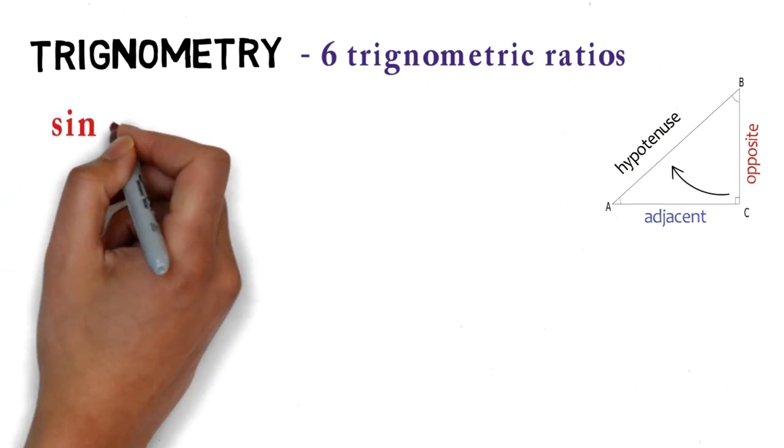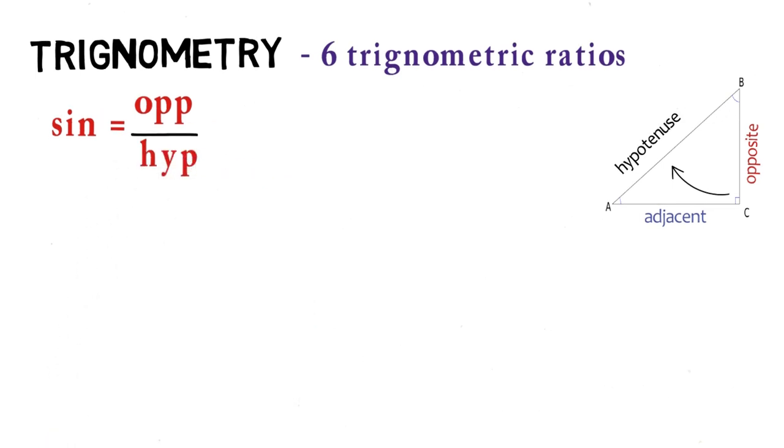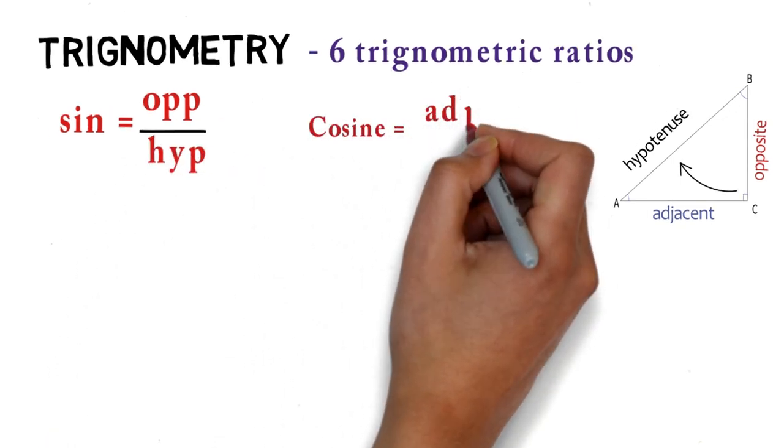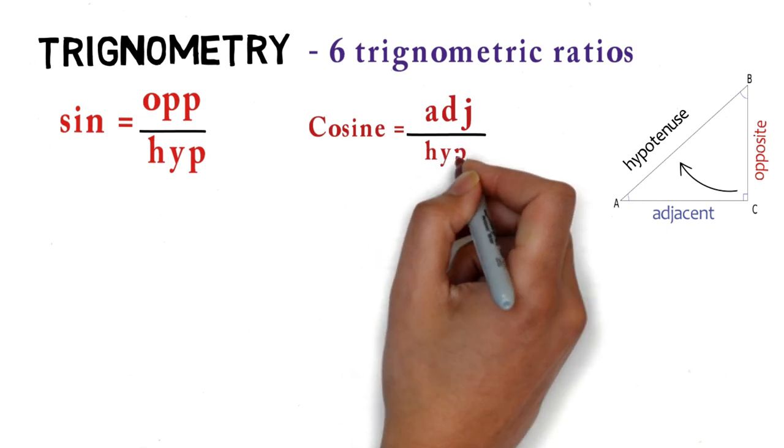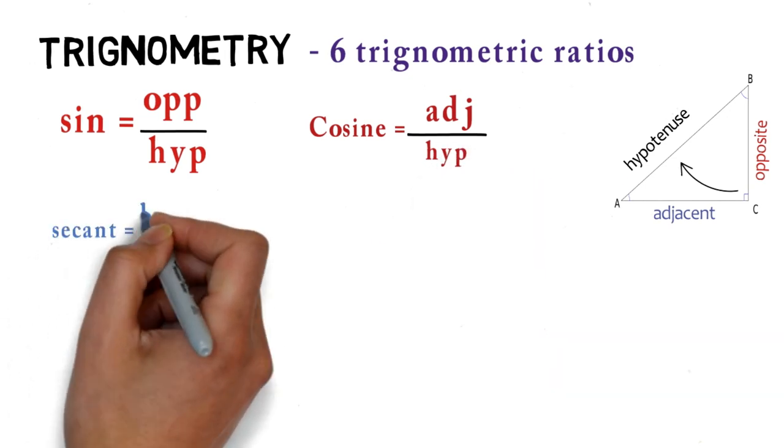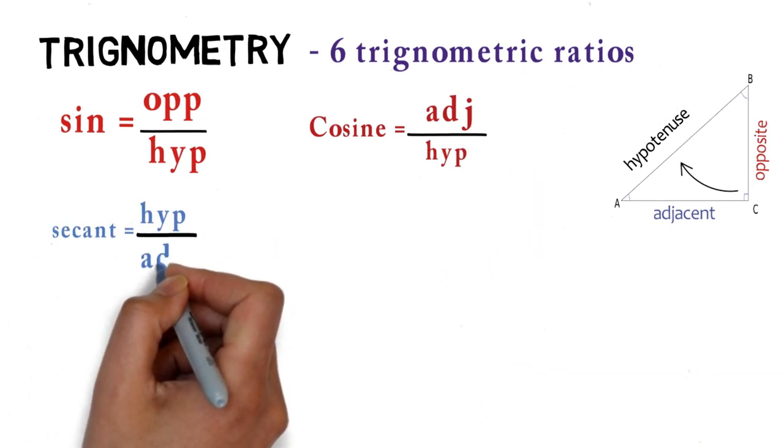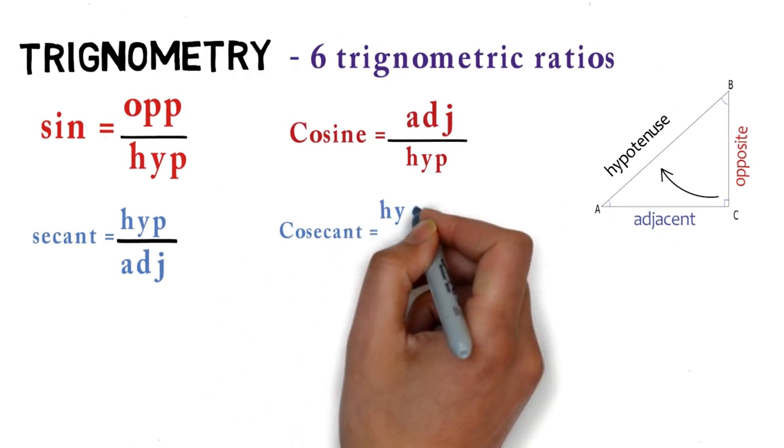Sine is opposite by hypotenuse, cosine is adjacent by hypotenuse, secant is hypotenuse by adjacent, and cosecant is hypotenuse by opposite.